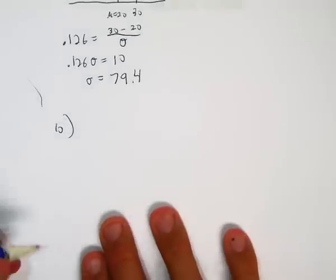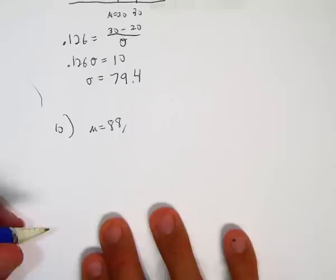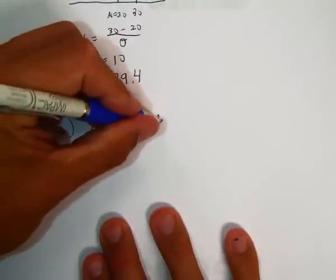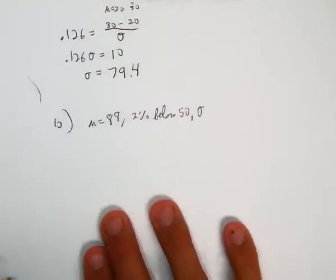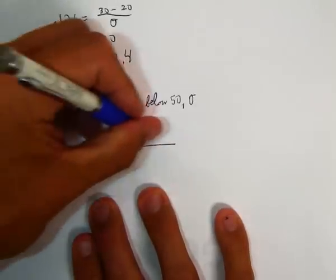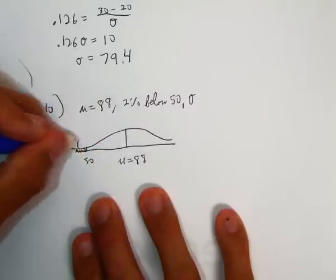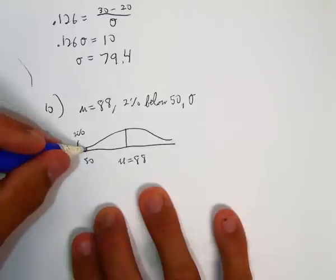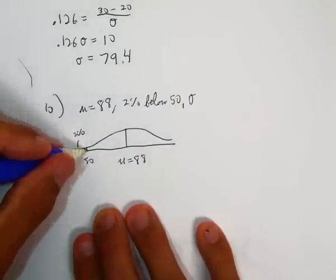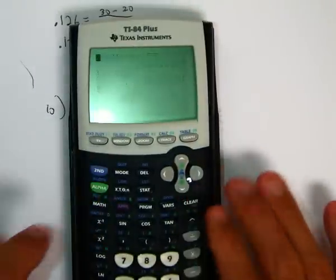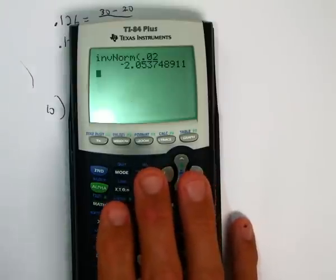In part B, what do we know? We know that mu is 88 and we don't know what sigma is again. So draw a picture: mu is 88, 50 is over here somewhere, 2% are below. We've got to figure out what percentile that is to do our z-score. Going from left to right, that would be the 2nd percentile. So we're going to do inverse norm at 0.02, and that gives us a z-score of negative 2.054.